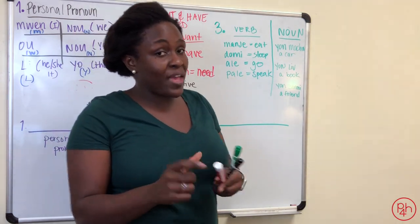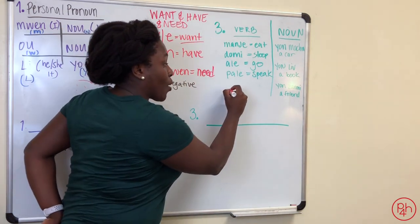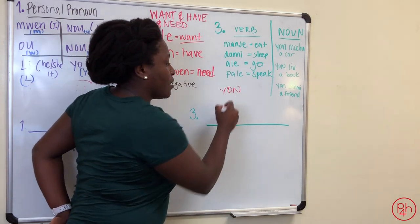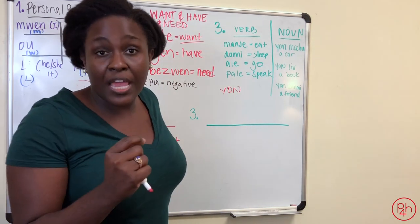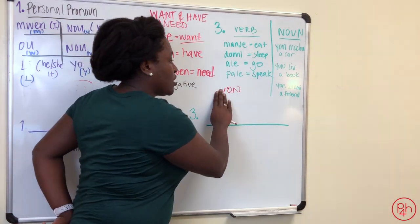So, again, yon machin is a car. Yon liv is a book. Yon zami is a friend. Now, if you'll remember with mwen, the EN made the E sound. Also, ON makes the ON sound. So you're not saying yon. You're saying yon. Yon. Yon machin, yon liv, yon zami.